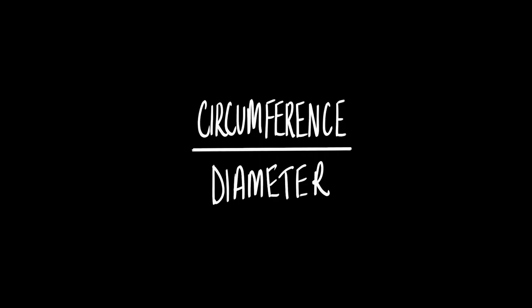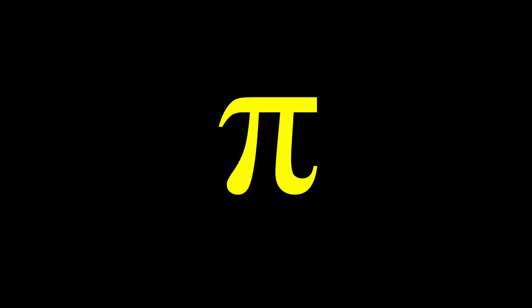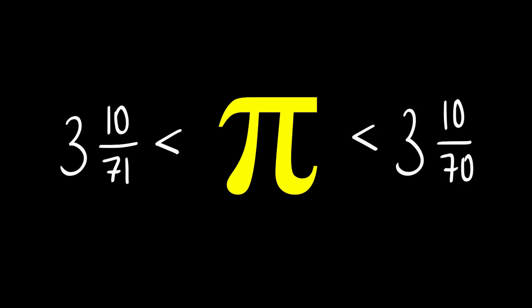Finally then, Archimedes could confidently say that the ratio of a circle's circumference to its diameter, the number we all know today as pi, to be greater than 3 and 10/71 but less than 3 and 1/7. This display of mathematics kind of leaves me speechless. I mean, it's impressive by today's standards, let alone around 2,300 years ago.